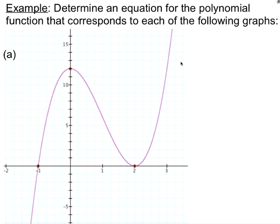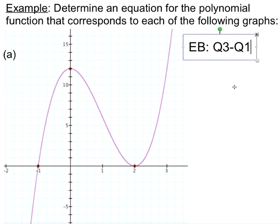So if we've got end behavior Q3 to Q1, this tells us two things. It tells us that we have a positive leading sign and we also have an odd degree.